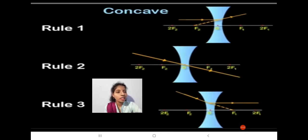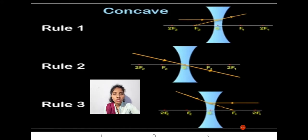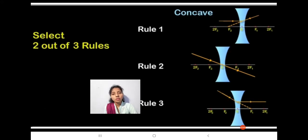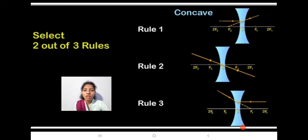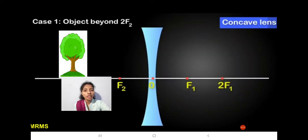So these are the three rules to draw the ray diagrams for the concave lenses. You can observe that Rule 1 and Rule 3 are quite opposite — this is due to the reversibility of light. Similarly for concave lenses, we have to choose two out of the three rules to draw the ray diagrams.